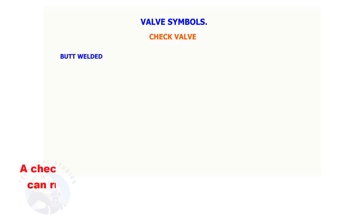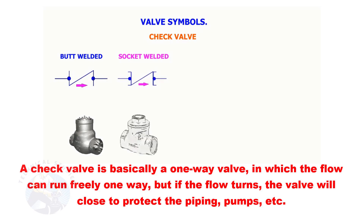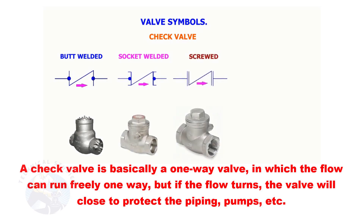A check valve is basically a one-way valve in which the flow can run freely one way, but if the flow turns, the valve will close to protect the piping, pumps, etc.